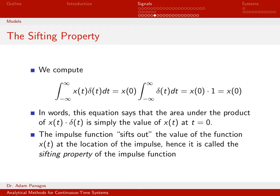Let's say that I wanted to compute the integral of the product between a continuous time signal x of t and our impulse function. In the last video, we learned how to multiply x of t times the impulse function. We know what happens: this continuous time signal is really zero everywhere, and we can replace it with just the impulse multiplied by a scalar.